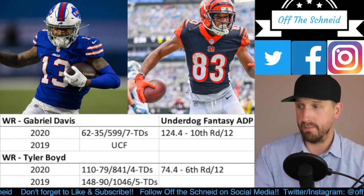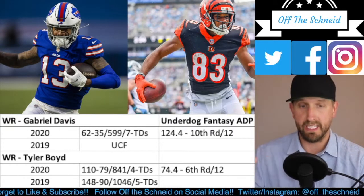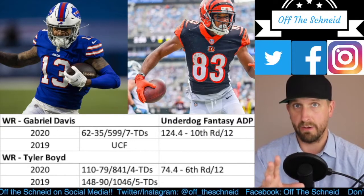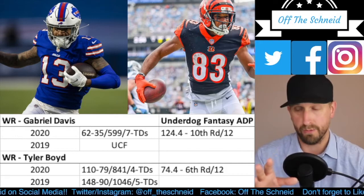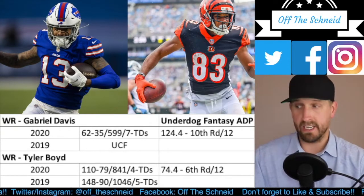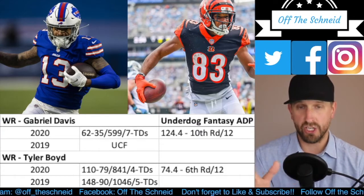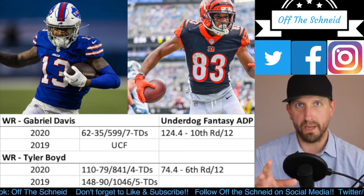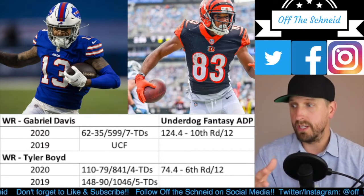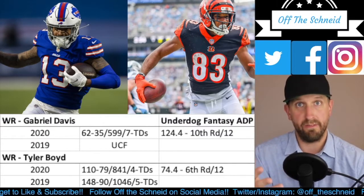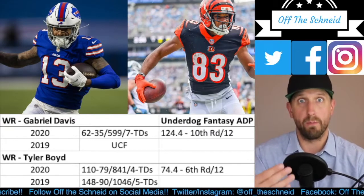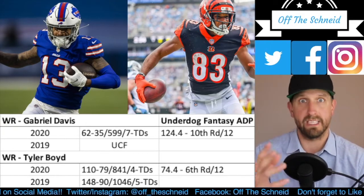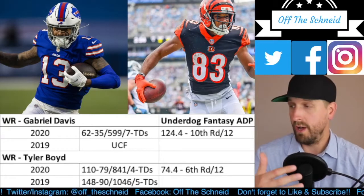Jamar Chase coming in is going to take reps away from Tyler Boyd. I think Chase and Tee Higgins are the top two guys in Cincinnati, though there's still room for Boyd to continue his stat line. With Gabe Davis, you have an improving quarterback, continuity on the offensive line, and Josh Allen is a top-five QB right now. With Cole Beasley's issues he may not even be on the team, and if Stefon Diggs misses any time, Davis becomes the clear number one. Four rounds later, give me Gabe Davis as my WR3.